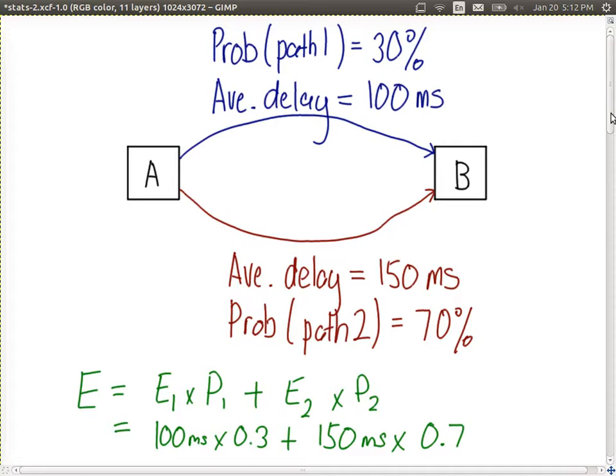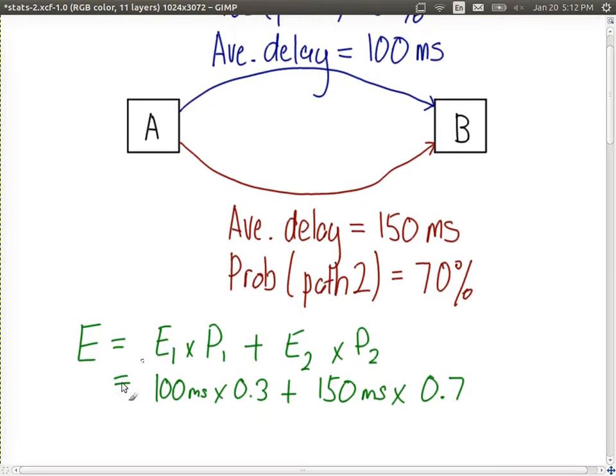And we calculate that to be the total expectation of 135 milliseconds. So in our system, on average, our packets will take 135 milliseconds to get from A to B.